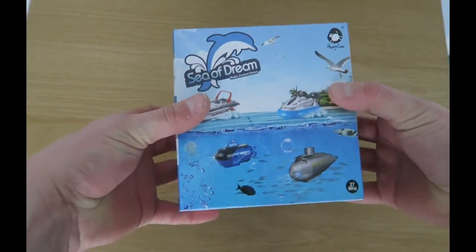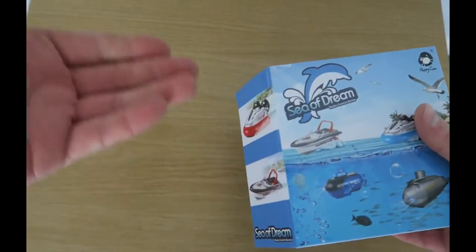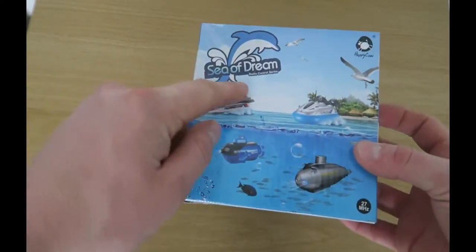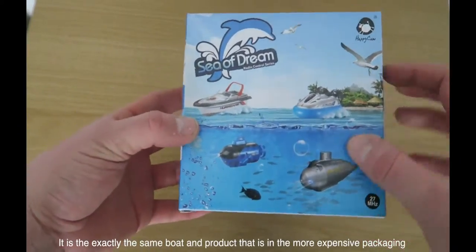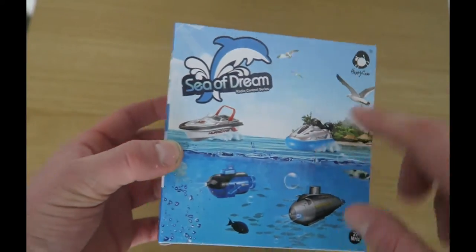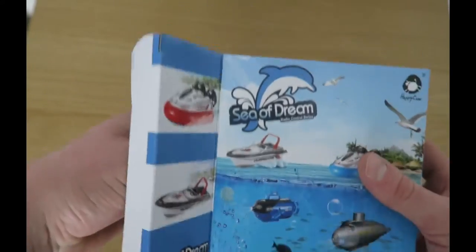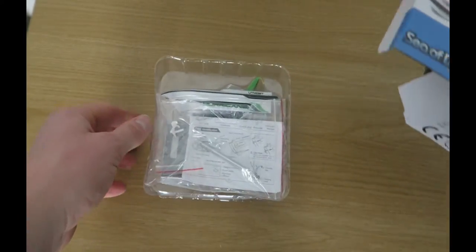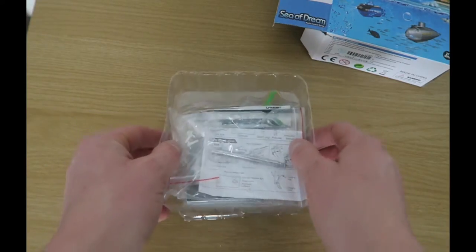So it's not the original box. The original box should look like this. This one they've just put in a Sea of Dream Radio Control series, where they've got a few other things: a submarine, two submarines, and a hovercraft boat. Let's have a look inside. This one's green.